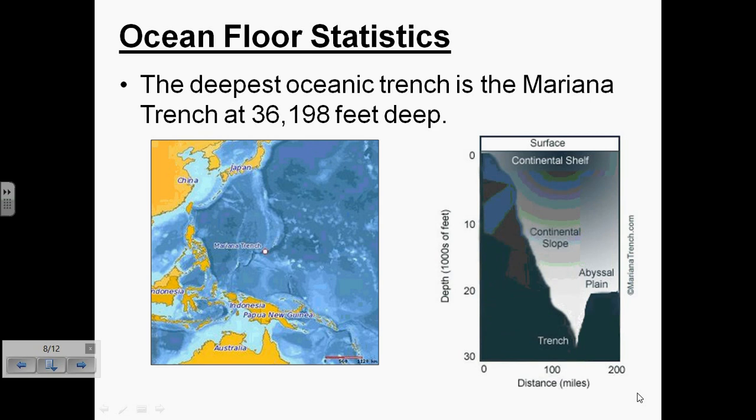The deepest oceanic trench, which we understand is a deep area underwater, is the Mariana Trench. The Mariana Trench extends 36,198 feet down. So that's pretty low down into the ocean.